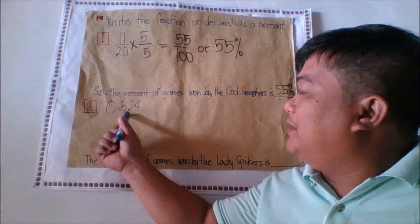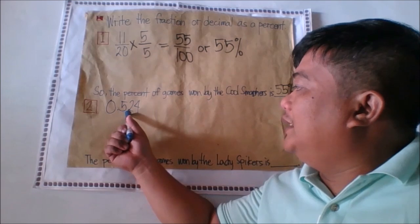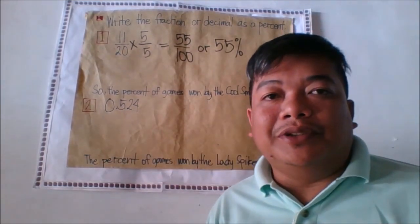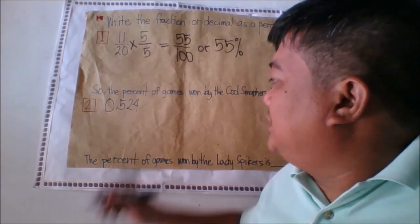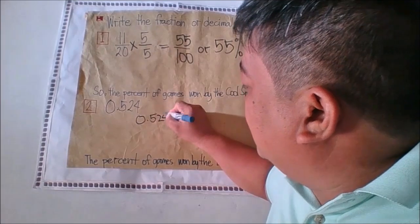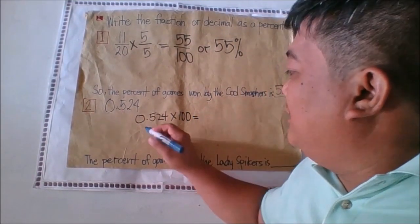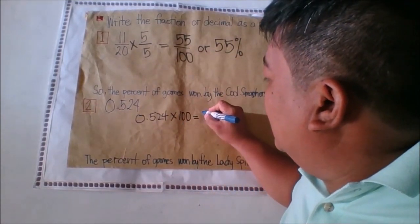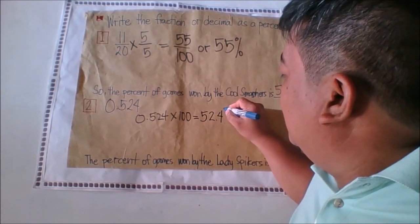Now let's move to converting decimal to percent. For 0.524, there are two methods. The first method: multiply 0.524 by 100, which results in 52.4 percent.